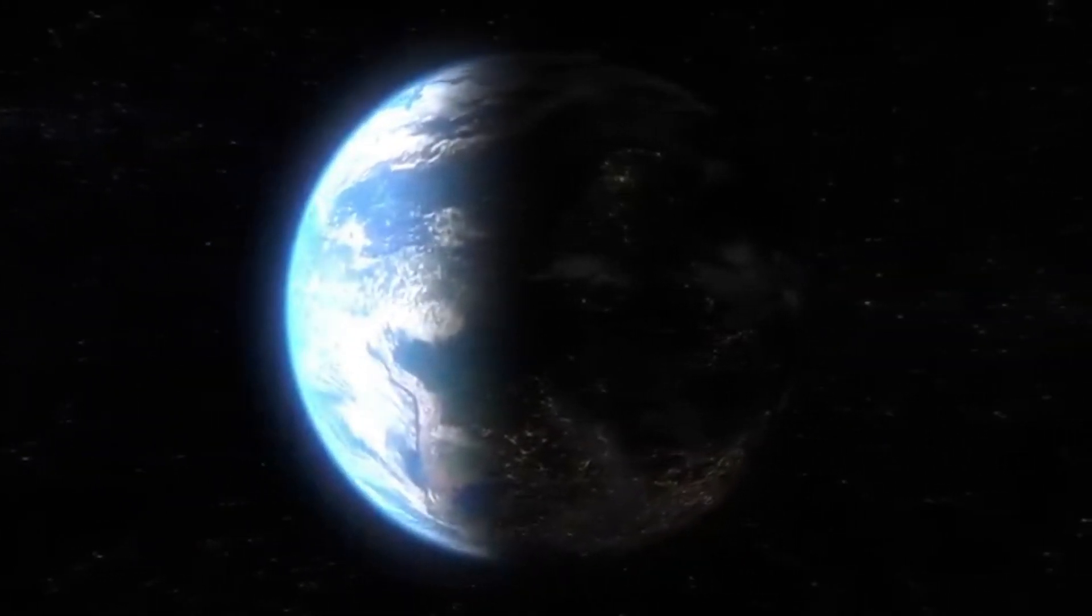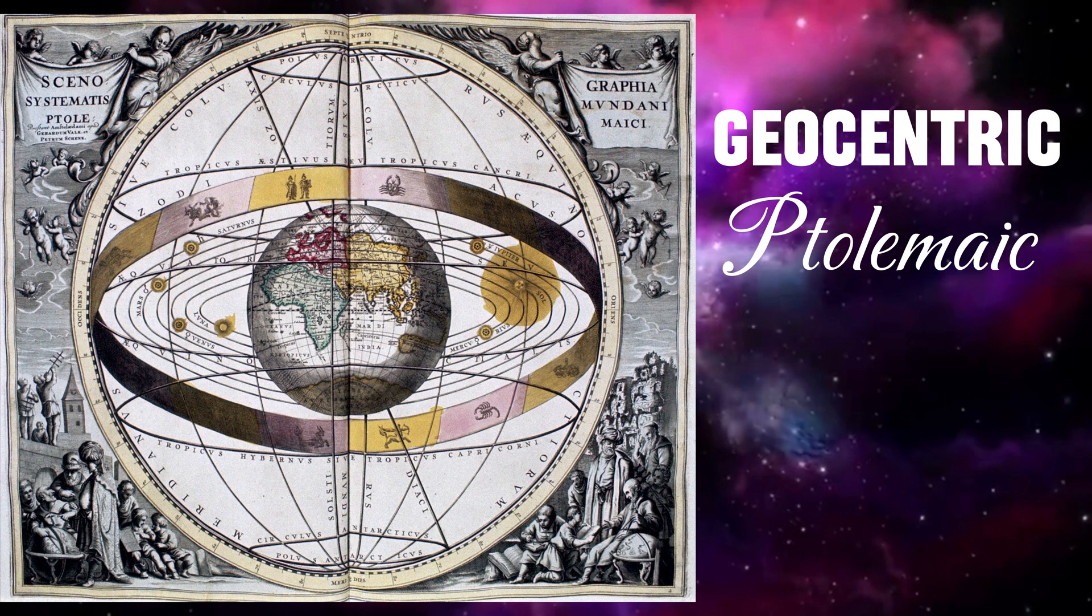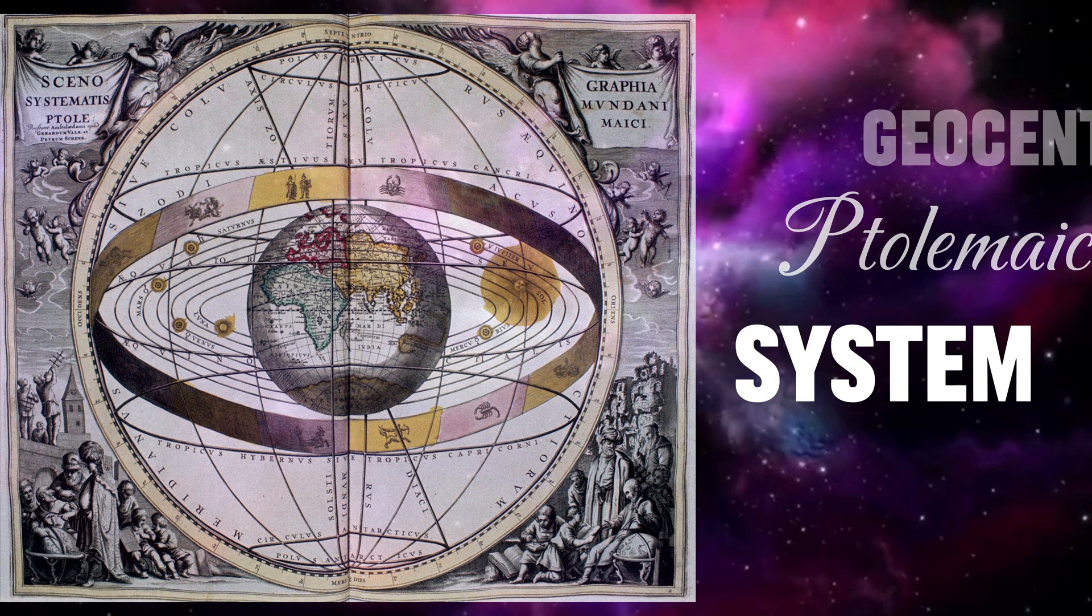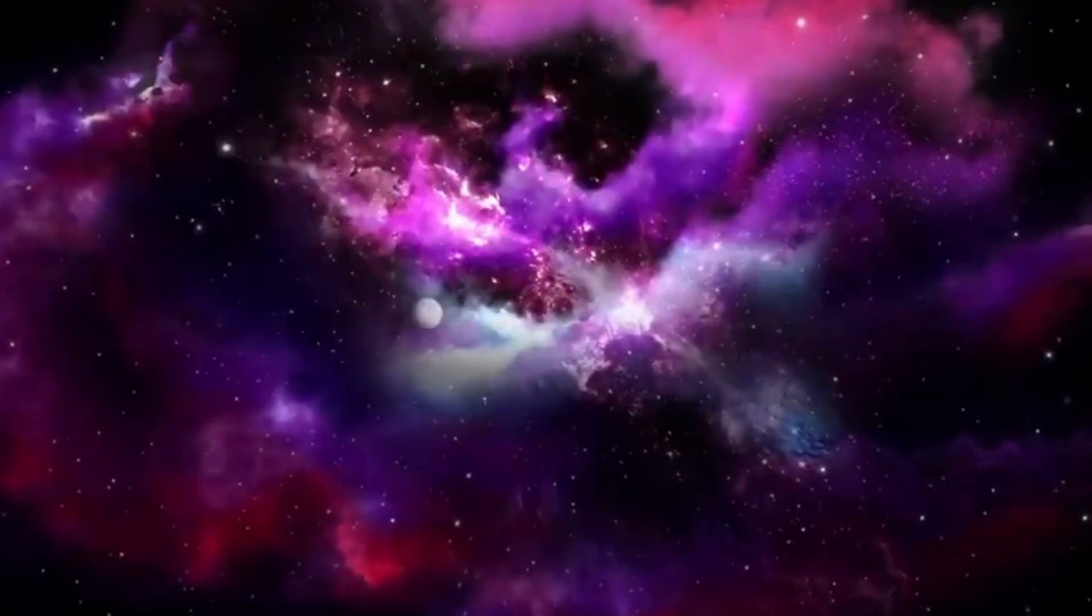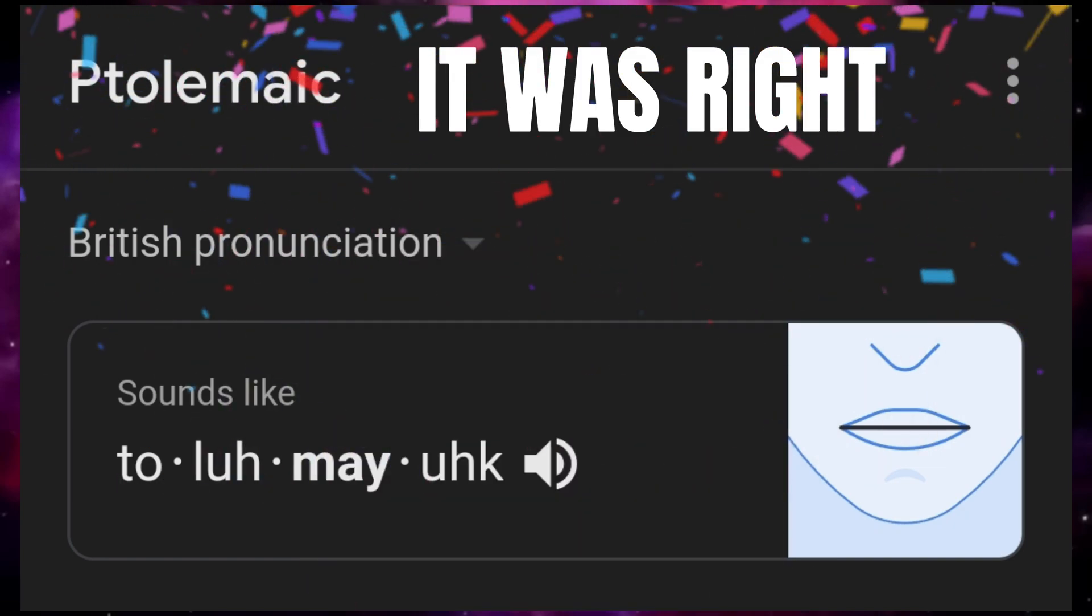Before the 16th century, Greek philosophers proposed different cosmological theories. The geocentric Ptolemaic system was the prevailing theory of the time anyway. Ptolemaic? That's right, yeah, that sounds right.